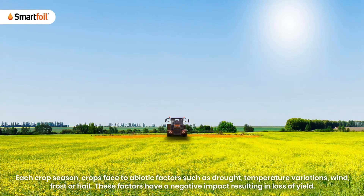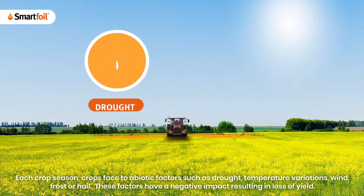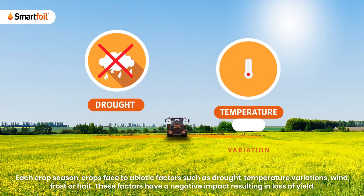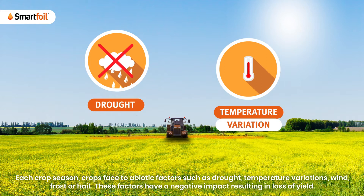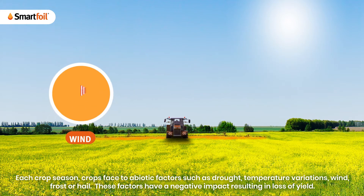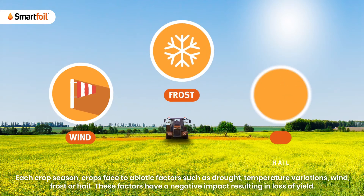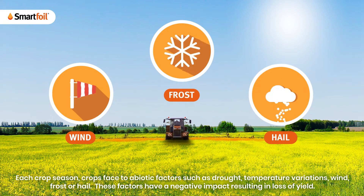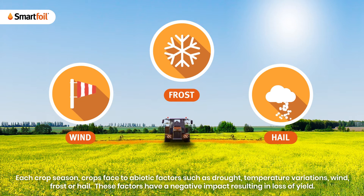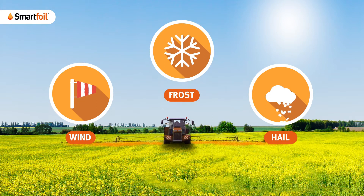Each crop season, crops face abiotic factors such as drought, temperature variations, wind, frost, or hail. These factors have a negative impact resulting in loss of yield.